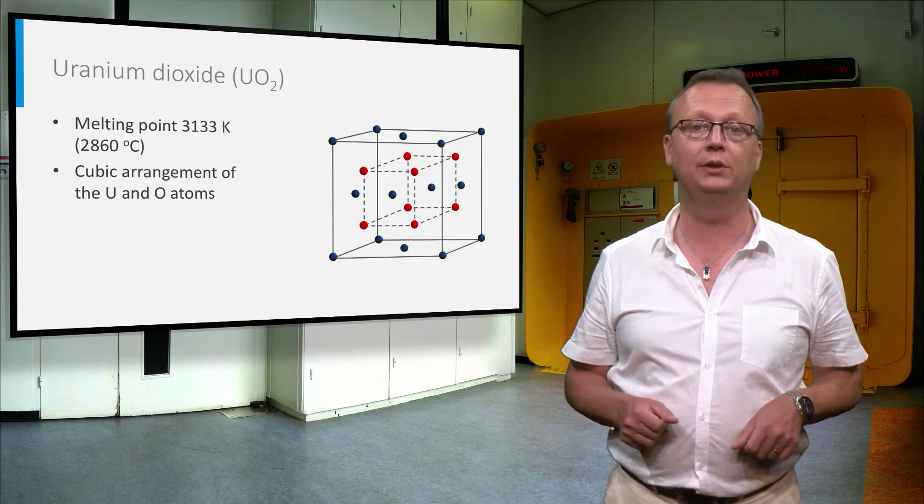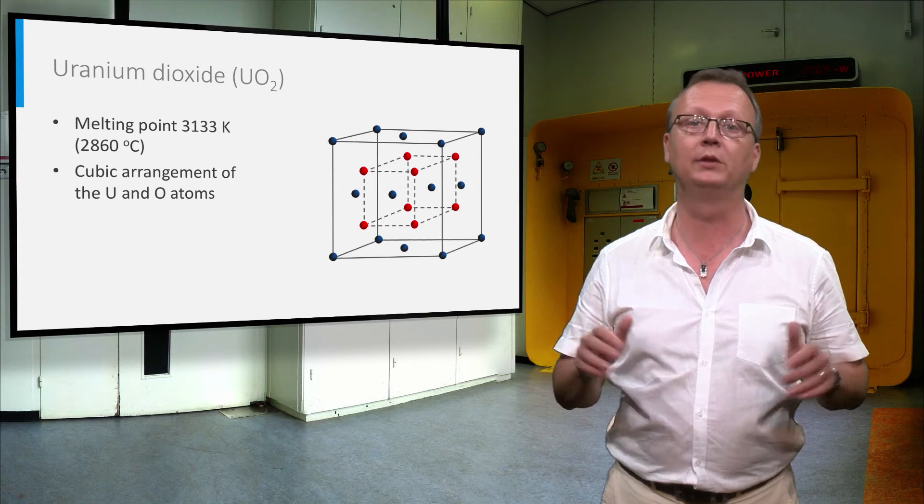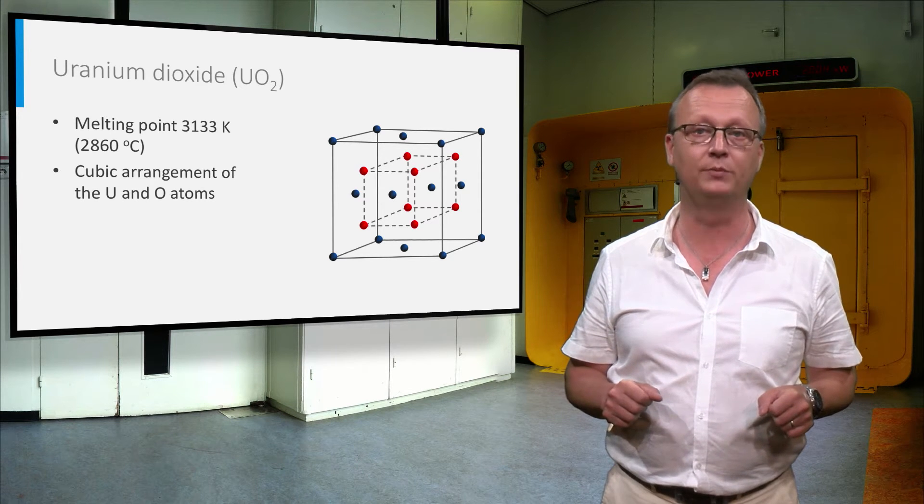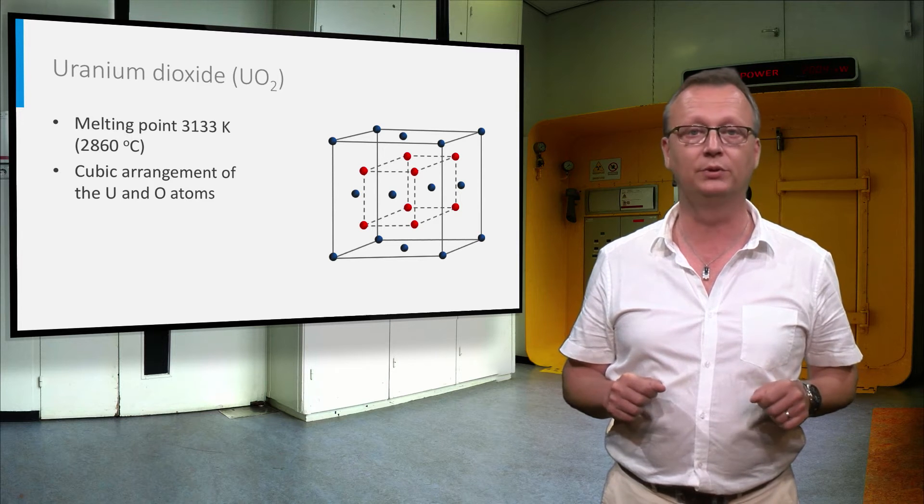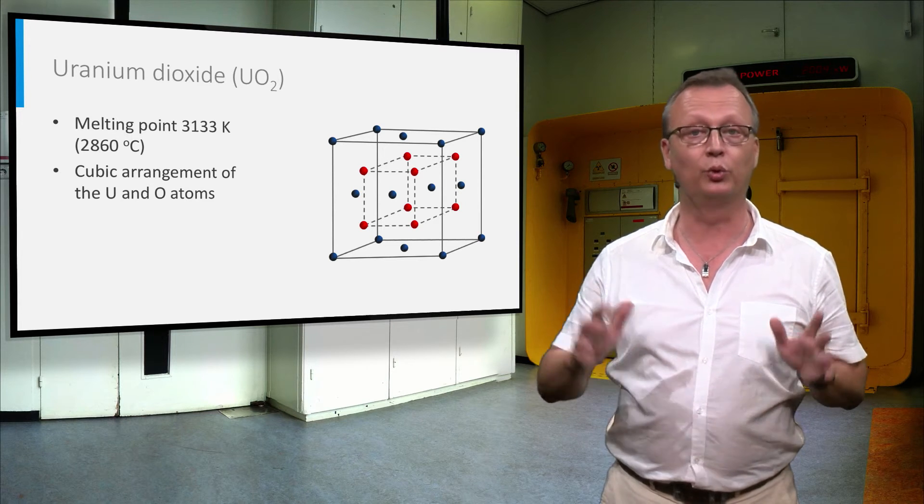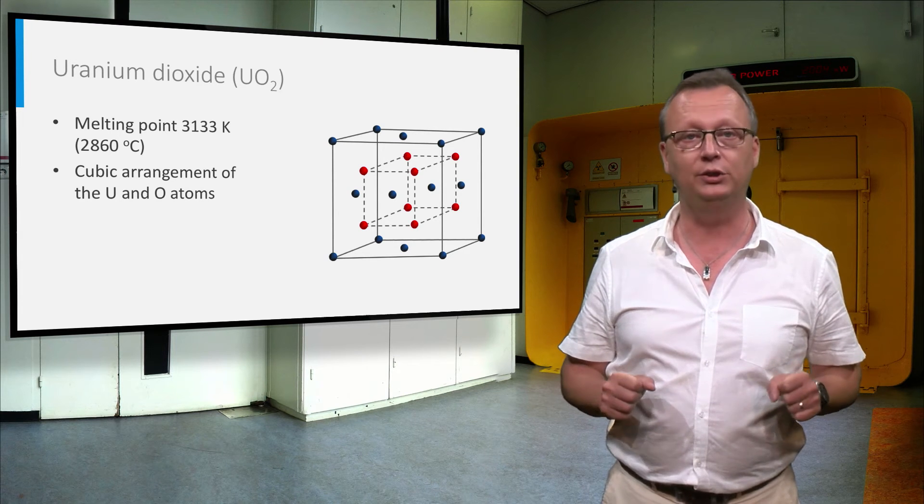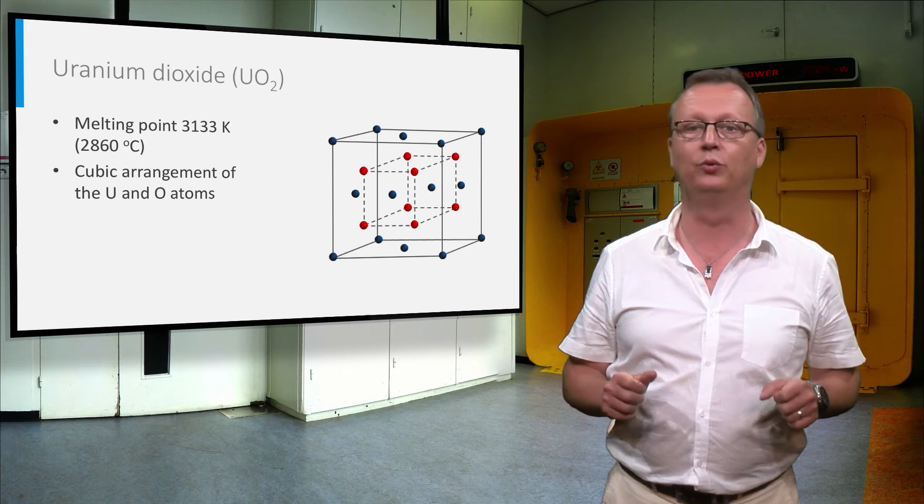Its crystal structure is composed of regular cubic arrangement of the uranium 4+ atoms, indicated in blue, and oxygen 2- atoms in red, with uranium on the corners and the faces of the cube and the oxygens regularly arranged inside the cube.